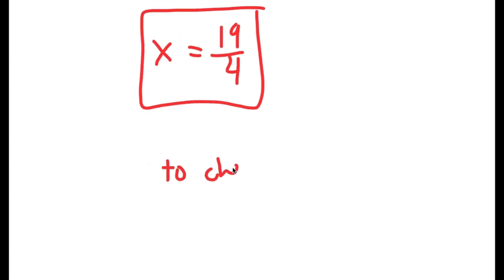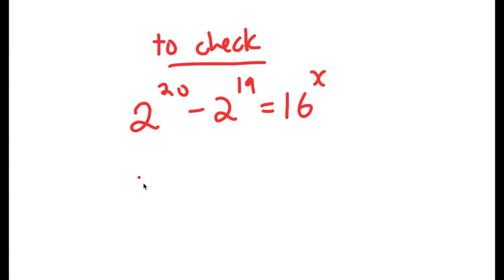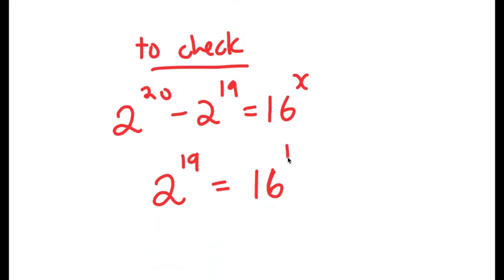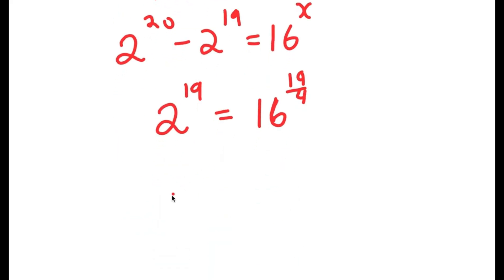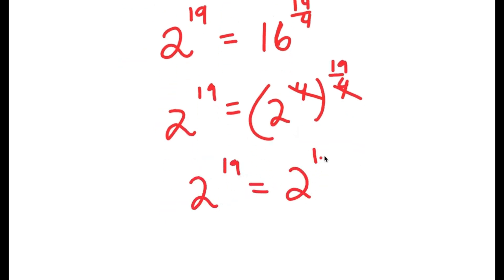Now to check, my original equation was 2 to the power of 20 minus 2 to the power of 19 is equal to 16 to the power of x. Now 2 to the power of 20 minus 2 to the power of 19, we already know that's 2 to the power of 19. So we get 2 to the power of 19 is equal to 16 to the power of 19 over 4. Now 16 is the same thing as 2 to the power of 4, so I have 2 to the power of 4 to the power of 19 over 4. And these two 4s cancel out, so I get 2 to the power of 19 is equal to 2 to the power of 19.